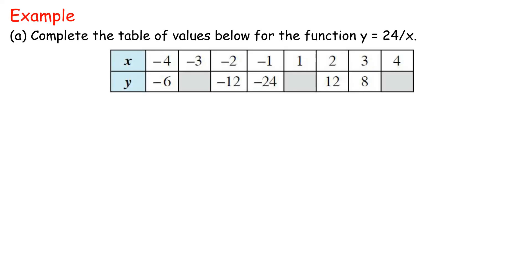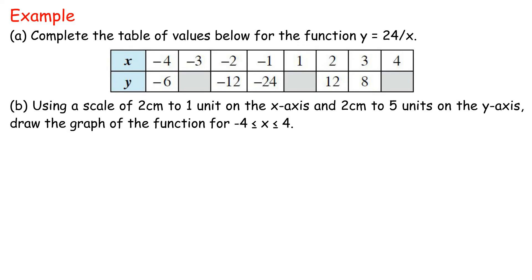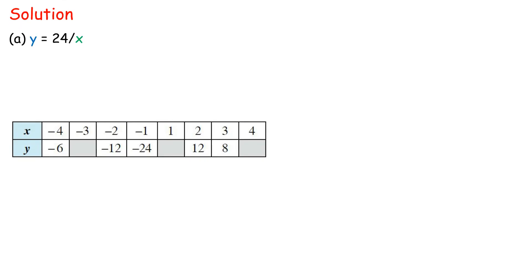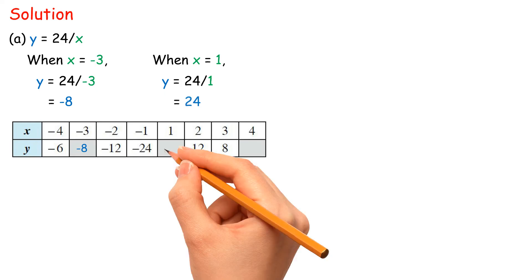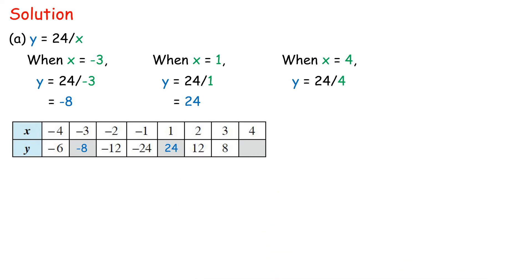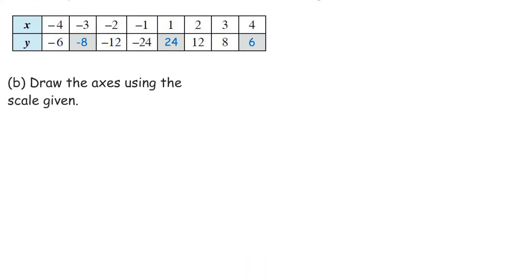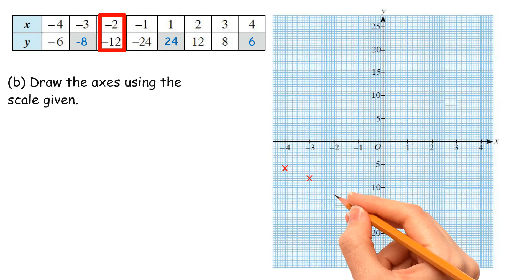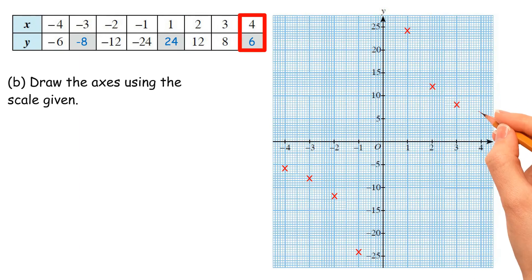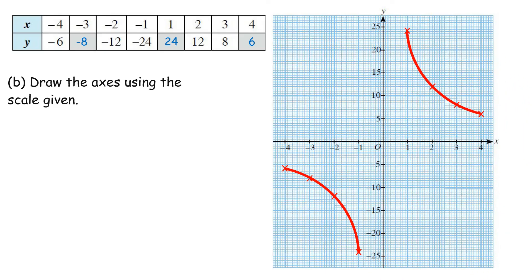Example: a) Complete the table of values for the function y equals 24 over x. b) Using a scale of 2 cm to 1 unit on the x-axis and 2 cm to 5 units on the y-axis, draw the graph of the function for negative 4 less than or equal to x less than or equal to 4. Solution a): When x equals negative 3, y equals 24 over negative 3 equals negative 8. When x equals 1, y equals 24. When x equals 4, y equals 24 over 4 equals 6. b) Draw the axes using the scale given. Plot the points and join them. Scale for x-axis: 2 cm to 1 unit. Scale for y-axis: 2 cm to 5 units.